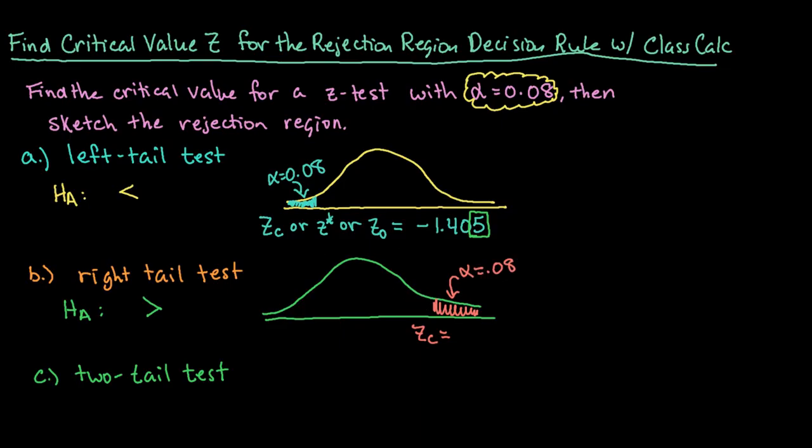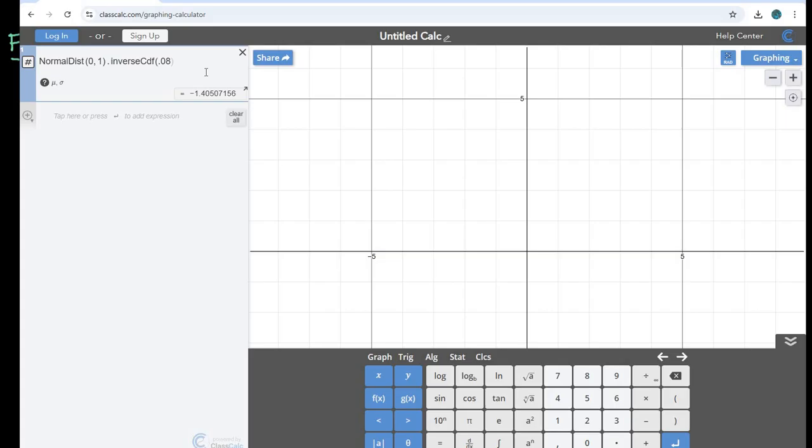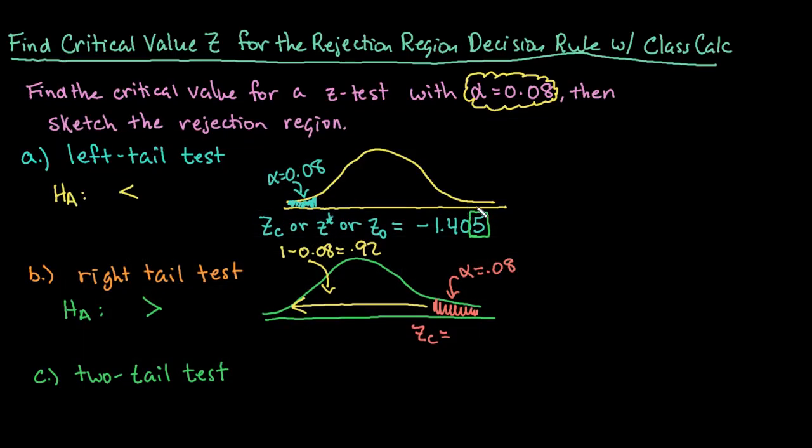So using class calc, we need the area to the left. So I would have to do 1 minus 0.08 as my area, which ends up being 92% or 0.92. So you could either plug in 1 minus 0.08, or you can just plug in the 0.92. So if I delete that 0.08 and put in 0.92 instead, notice that it gives me the same thing, just a different sign. And that's because the area to the left and the area to the right with the same area, the z scores are going to be the same, just opposite signs. So our critical value for this one would be 1.405.